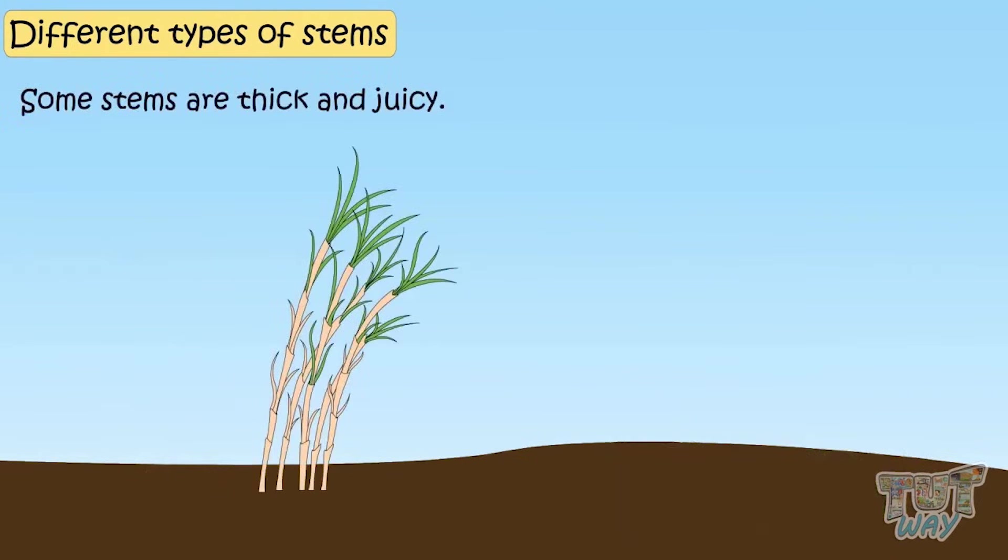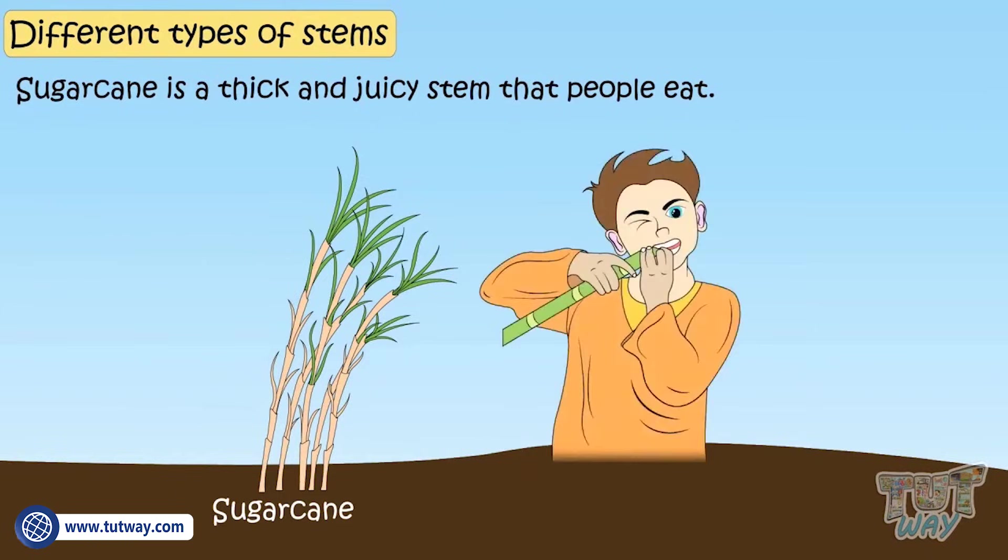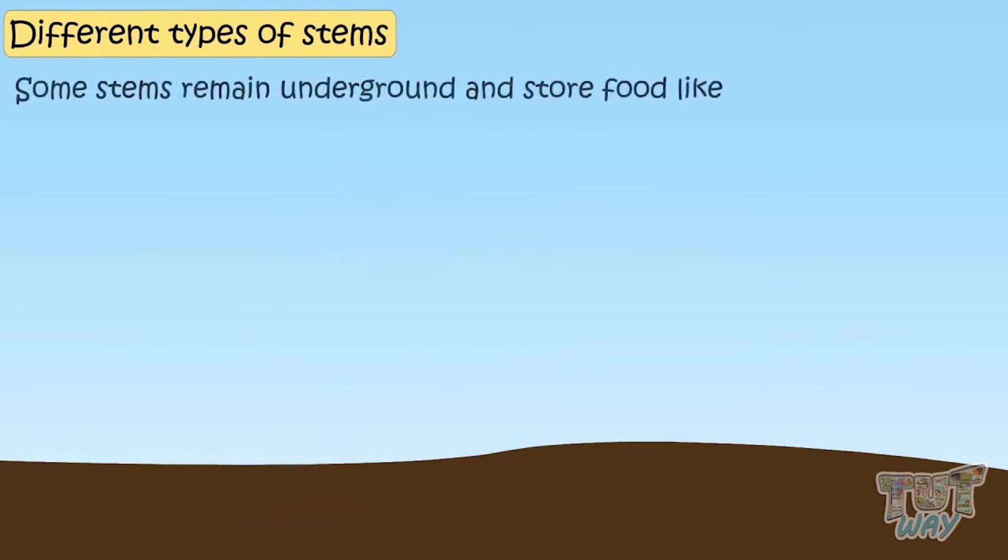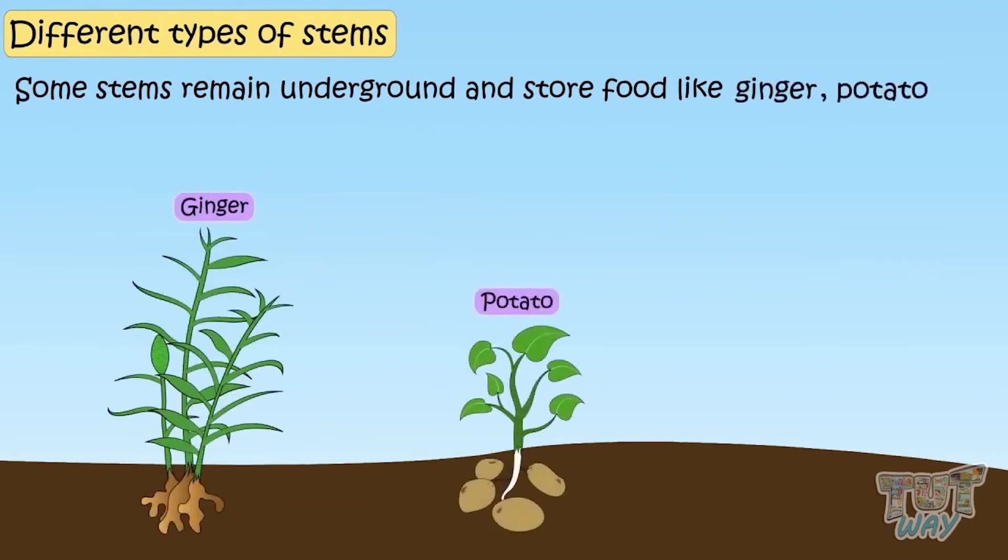Some stems are thick and juicy. For example, sugar cane. Sugar cane is a thick and juicy stem that people eat. Some stems remain underground and store food like ginger, potato and onion. These are actually stems that we eat.